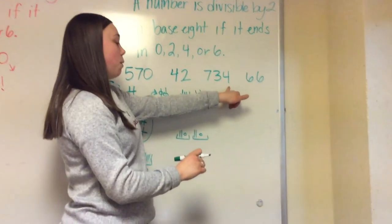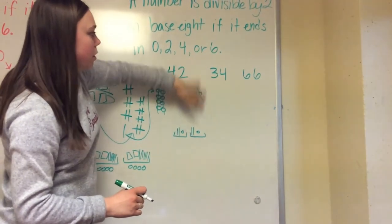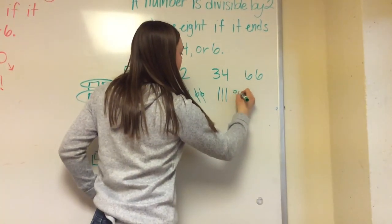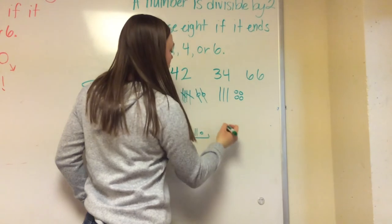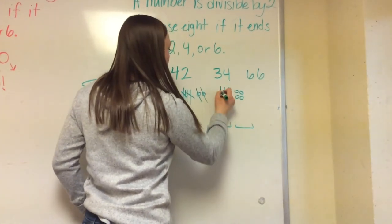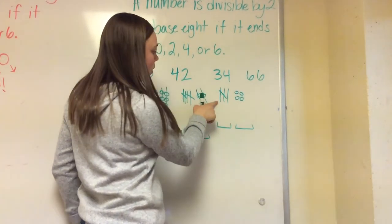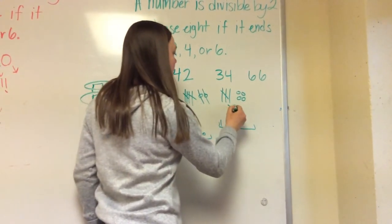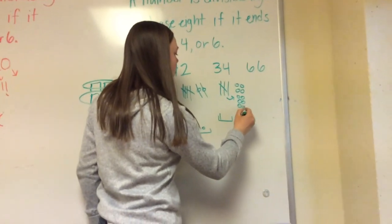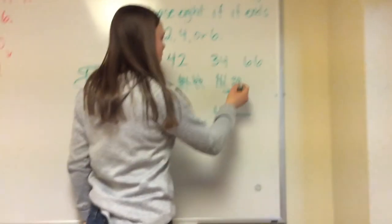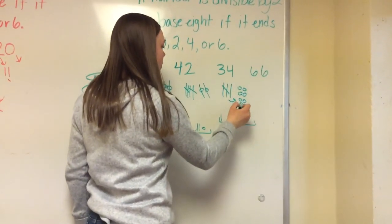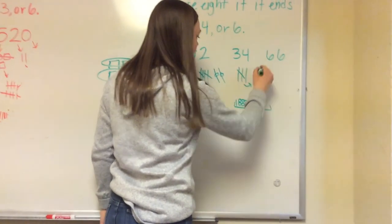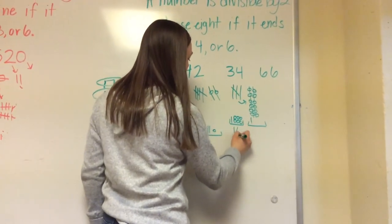Now if we look at a four in the ones place — let's just make this 34 for time's sake. We have three rods and four singles, and we're trying to make two groups. So one group of two rods, each group gets one. We regroup the remaining rod into eight singles, and then we have a total of twelve singles — each group is going to get six.